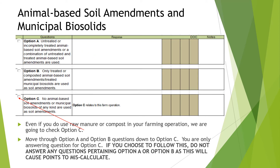Animal-based soil amendments and municipal biosolids: There are three options provided on this document. Even if you use raw manure or compost in your farming operation, we are going to check Option C. Move through Options A and B down to Option C — you are only answering the question for Option C. Do not answer any of the questions pertaining to Option A or Option B, as this will cause miscalculations.